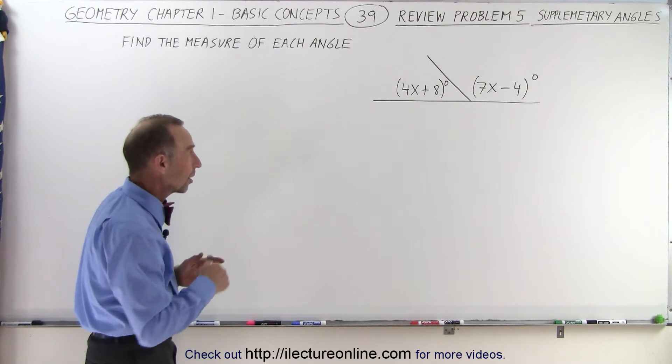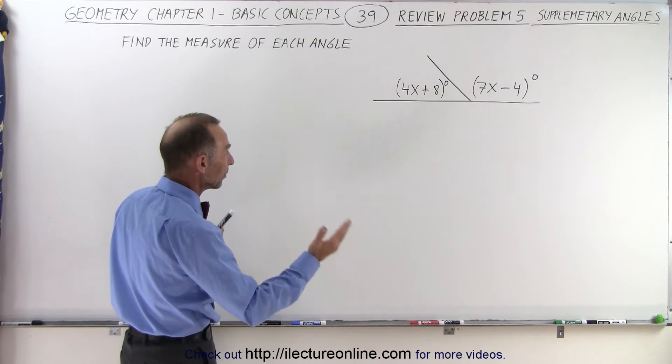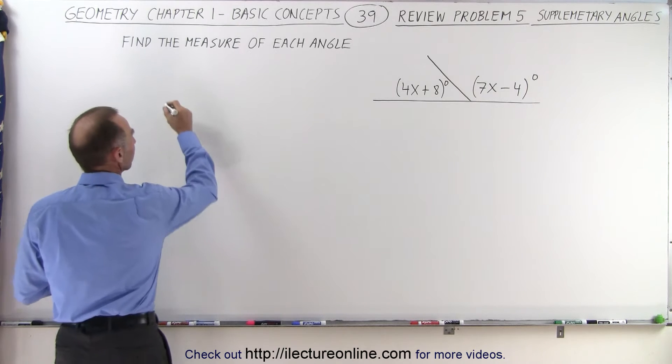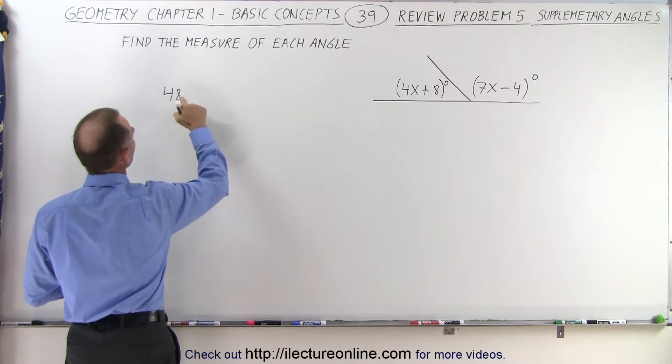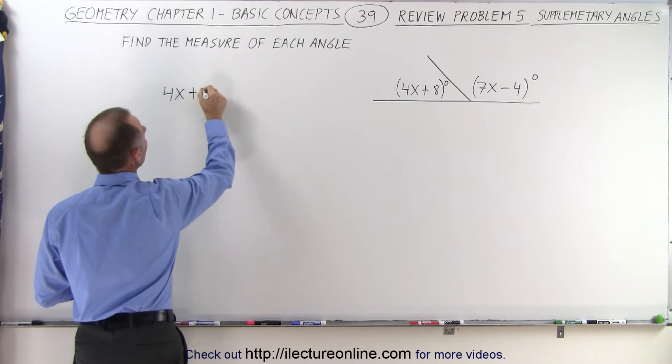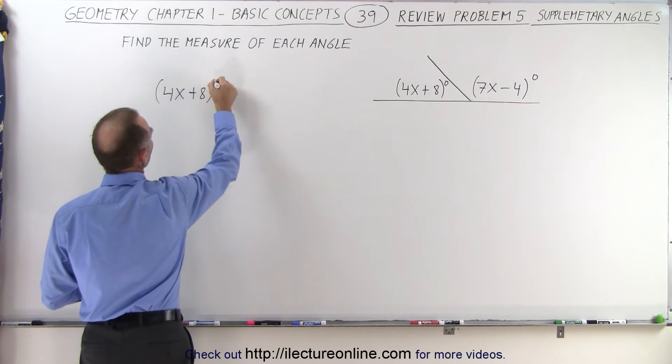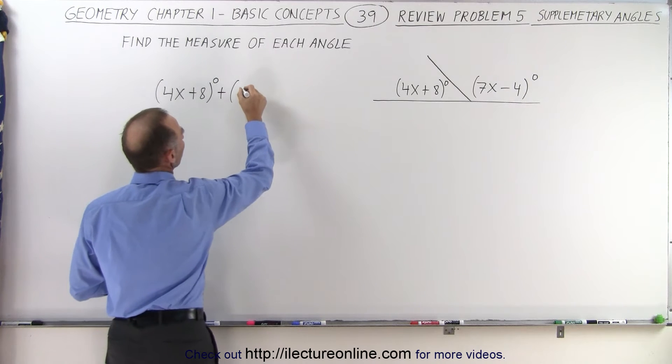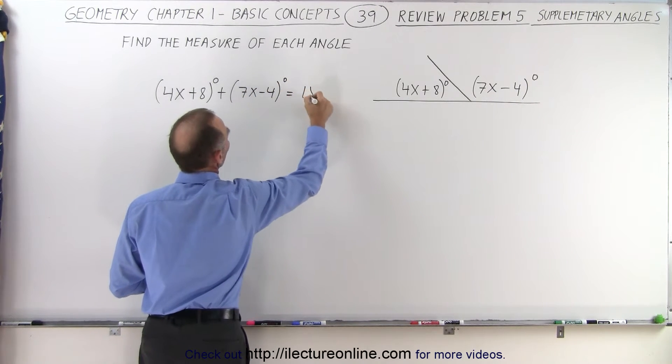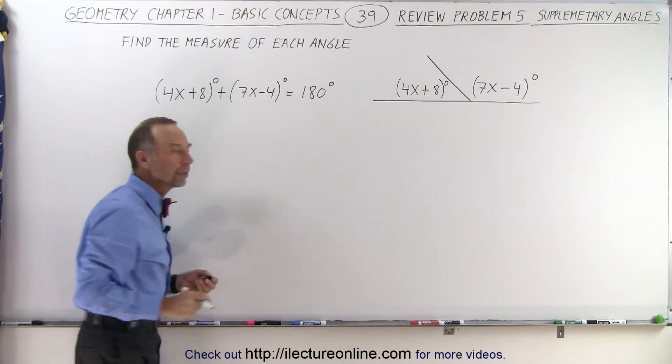That's the key to solve this problem. So we're going to add both angles together and set it equal to 180 degrees. So this gives us 4x plus 8 degrees plus 7x minus 4 degrees must equal 180 degrees.